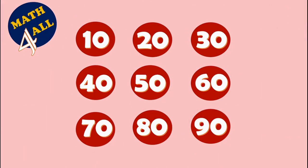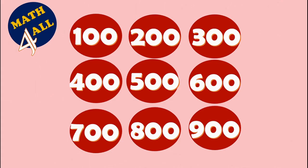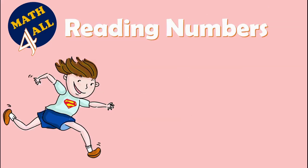What about counting by tens? Can you read this? Yes — ten, twenty, thirty, forty, fifty, sixty, seventy, eighty, ninety. Excellent! The next step: can you count by hundreds? Yes, I can — 100, 200, 300, 400, 500, 600, 700, 800, 900.